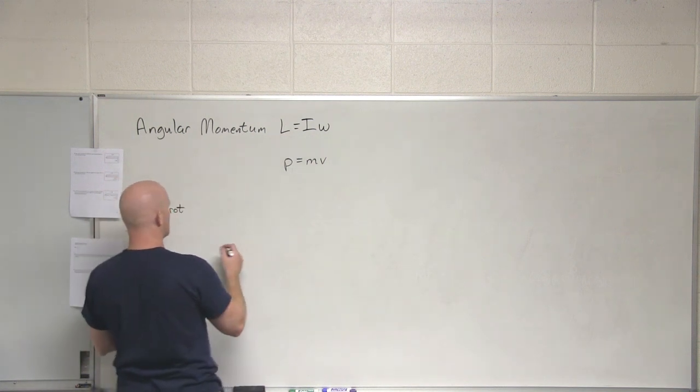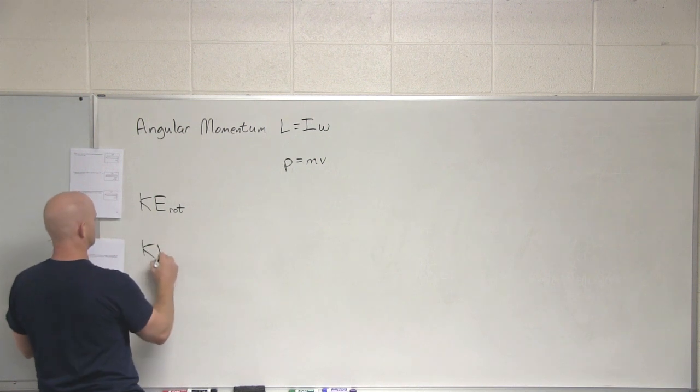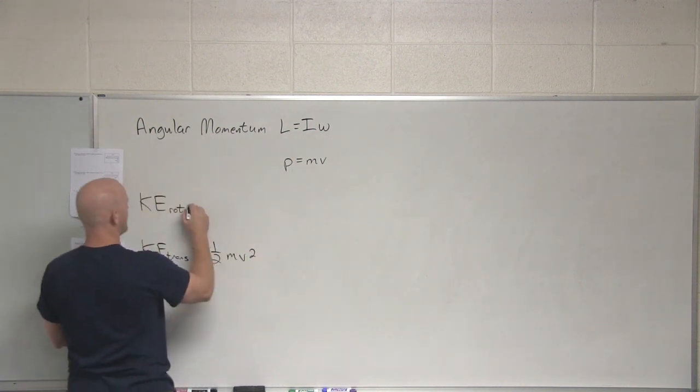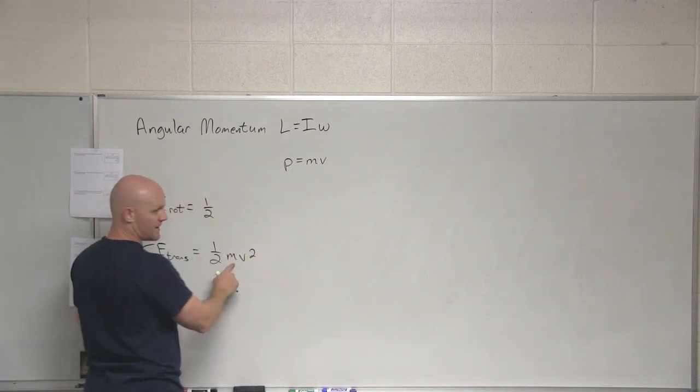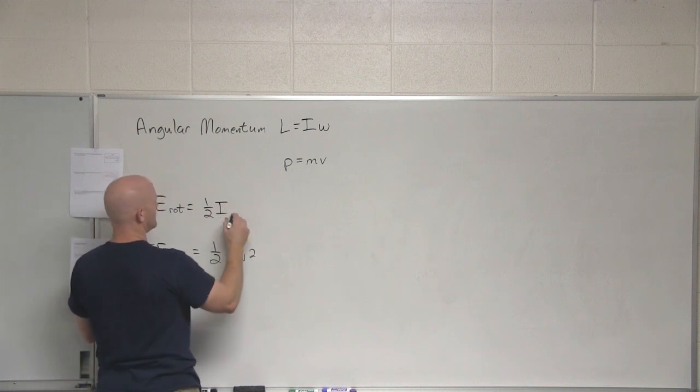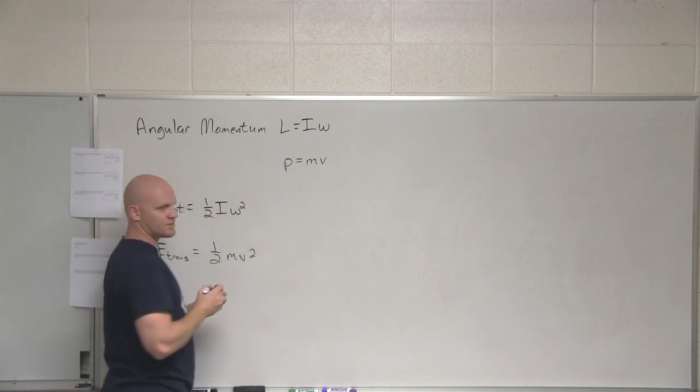Same thing with rotational kinetic energy. If you recall, what is translational kinetic energy? One half m v squared. Cool, so rotational, we don't have m, we have I, and we don't have v, we have omega. And that's rotational kinetic energy.